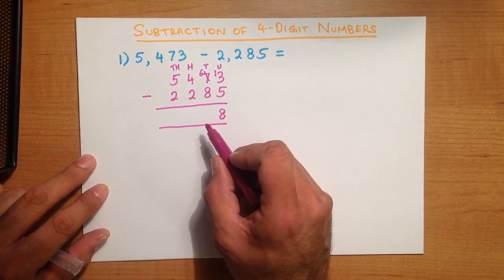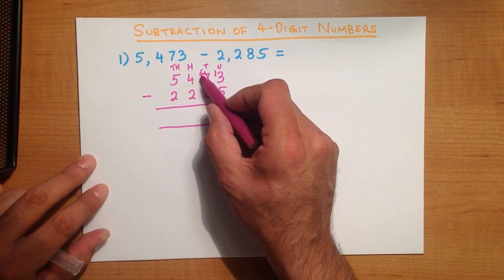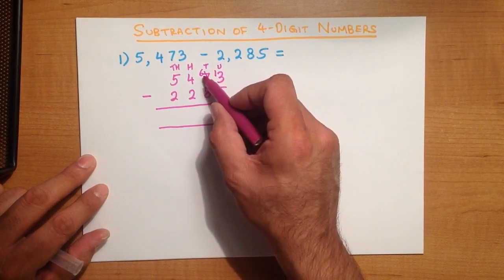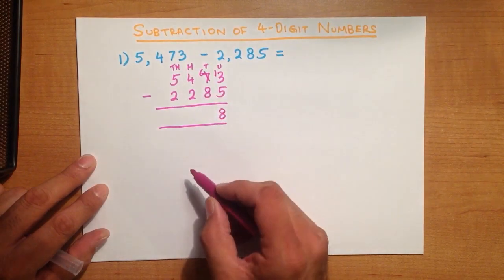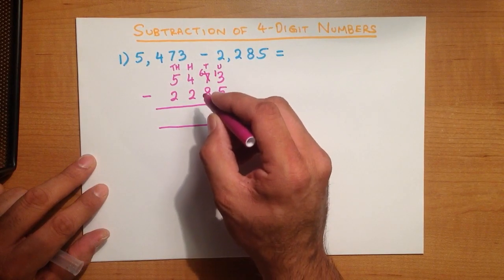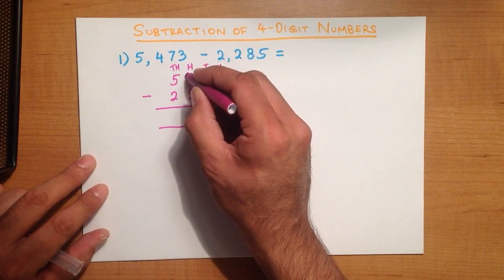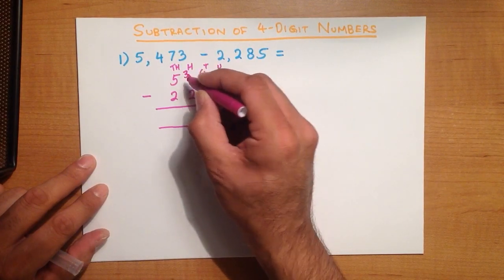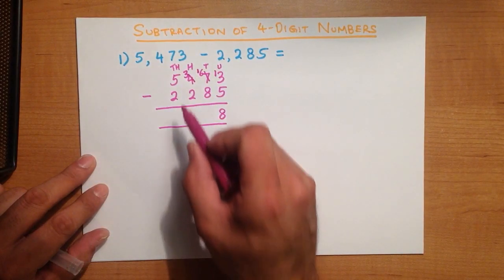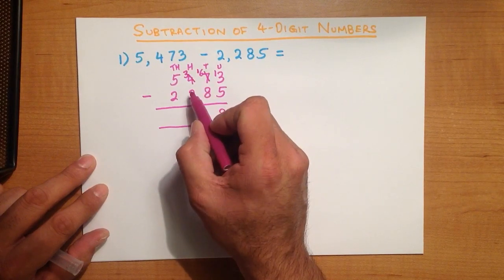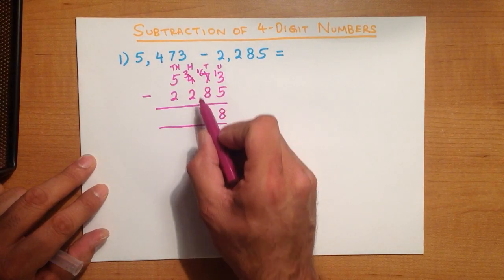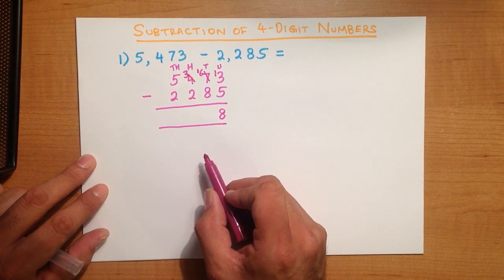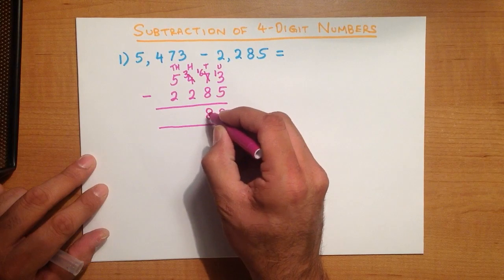We now do the tens column. We don't have 7 anymore because we went from 7 to 6 when we borrowed. So this is now 6 minus 8. We can't do this either because 6 is smaller than 8. So we take 1 from the column to the left — the 4 becomes a 3 — and we put a 1 here. The tens column now becomes 16 minus 8, which is 8.